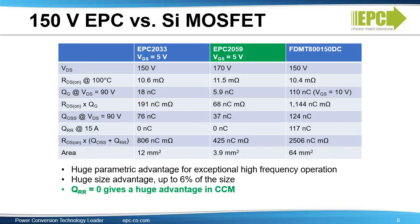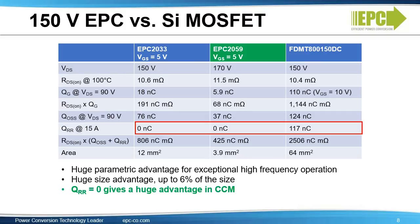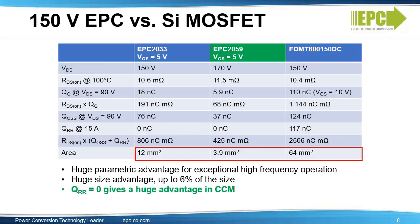Here we compare the parameters and figures of merit of a typical silicon MOSFET against the EPC2033 and EPC2059. The eGaN FETs have a huge parametric advantage for exceptional high-frequency operation. RDS(on) times QG for the eGaN FETs is only 6% that of the silicon MOSFET, and the QRR is zero. The RDS(on) times QOSS plus QRR is one-fifth that of the silicon MOSFET. The EPC2059 is also only 6% of the size of the silicon MOSFET, with PCB space savings of 60 square millimeters.